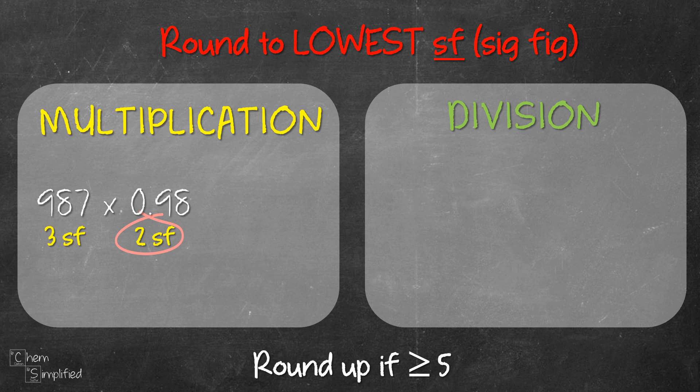We multiply 987 by 0.98 and we get 967.26. The first sig fig is 9 and the second sig fig is 6. That means we need to look at the digit after the second significant figure and decide whether to round up or not. Since that digit is 7, which is 5 and above, we need to round up. Rounding up gives us 970 — we add 1 to 6, so therefore we get 970.